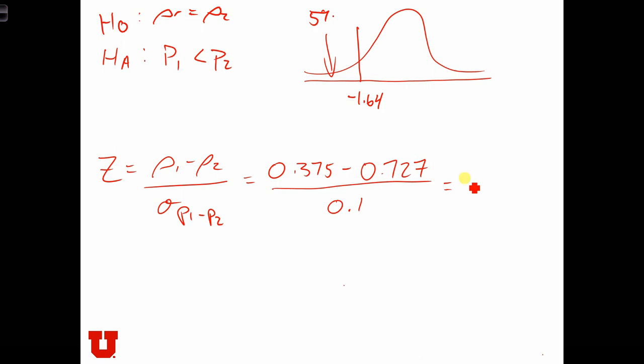In the end, this equals minus 3.52, which is way out over here in the tail. So to conclude, we reject the null, and probably Republicans favor gun control less than Democrats.